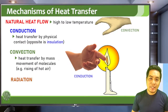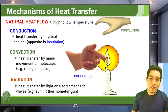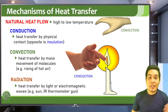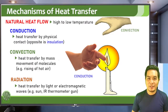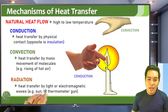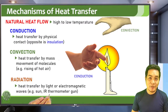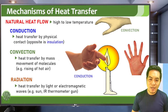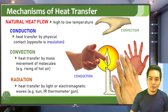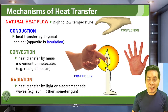The last mechanism of heat transfer is radiation, which involves light or electromagnetic waves. An example is the heat from the sun — the heat you feel is due to infrared light or infrared radiation. Also, the way an IR thermometer gun operates is by detecting heat through radiation. If you place your hand at the side of a candle without physically touching it, you will still feel the heat because of radiation.